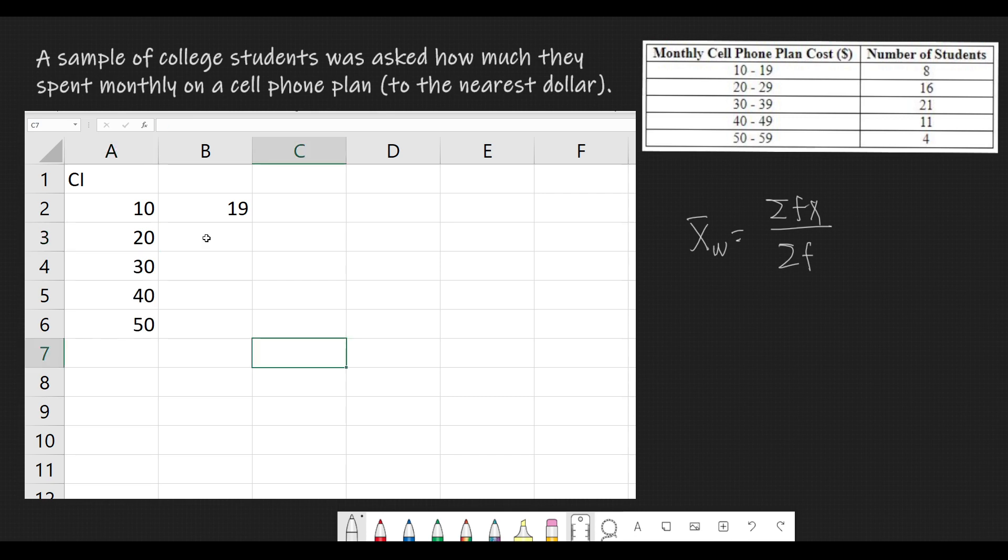We apply the same steps for the B column. So, it's equal sign, click B2, plus 10, we get 29. We drag this until we get the upper limit.